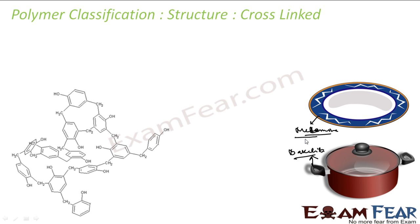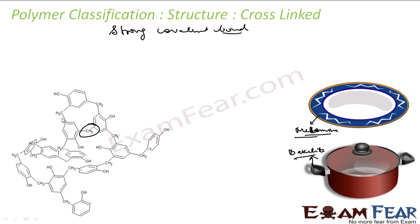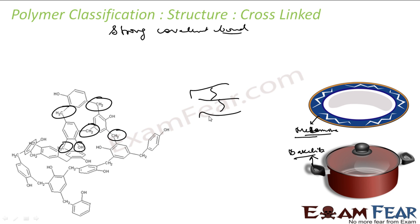Cross-linked polymers are formed by bifunctional or trifunctional monomers, and they have very strong covalent bonds between the various linear chains. You can see they are all cross-linked — there is a link here, there is a link here, many links forming a zigzag network.